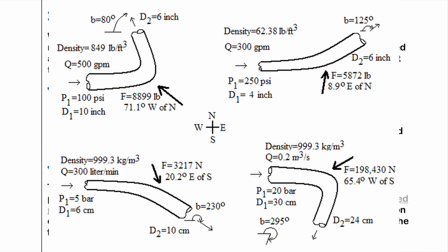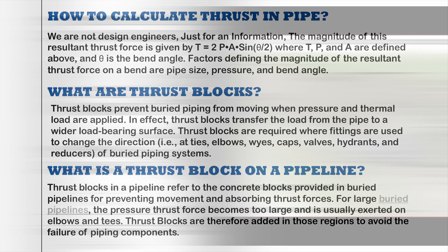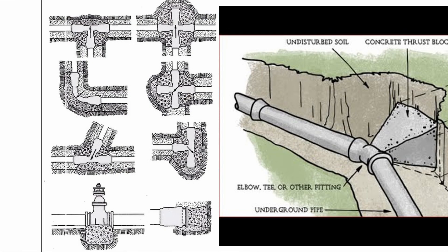How to calculate thrust in a pipe? We are not design engineers, but just to have an idea, let us discuss this formula. The magnitude of the resultant thrust force is given by: T = 2 × P × A × sin(θ/2), where T is the thrust force, P is the pressure, and A is the cross-sectional area. θ is the bend angle.